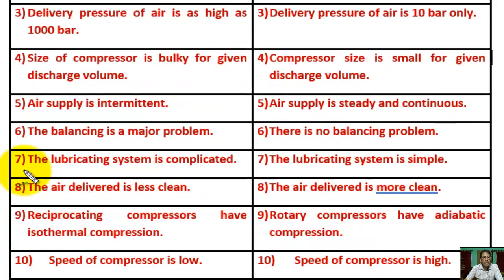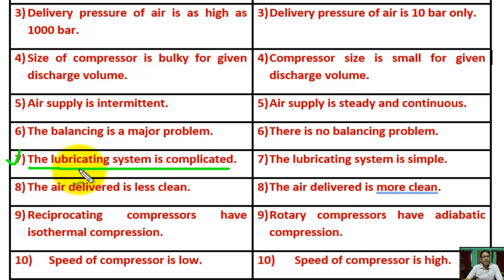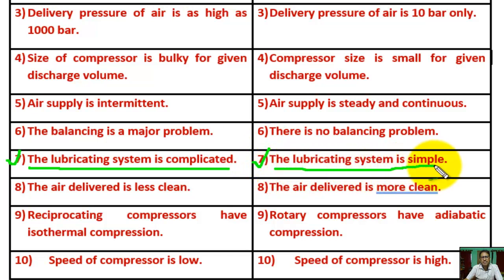Point 7: For reciprocating compressor, the lubricating system is complicated because it mostly has sliding or reciprocating components. For rotary compressor, the lubricating system is simple because most of the parts are rotating.